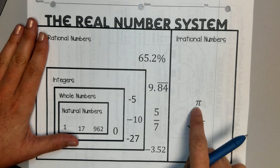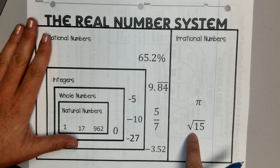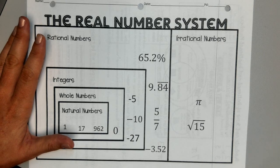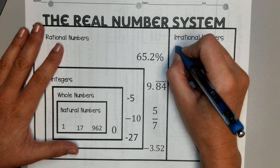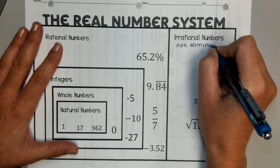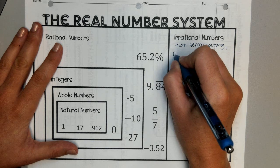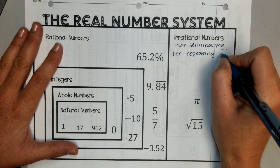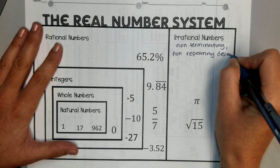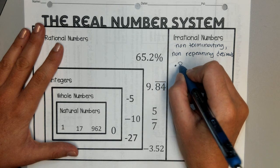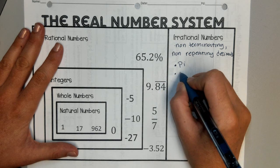Our irrational numbers are pi and square roots of non-perfect squares. They're non-terminating, which means they never end, and non-repeating decimals, so they have no pattern. The ones you need to know are pi and square roots of non-perfect squares.